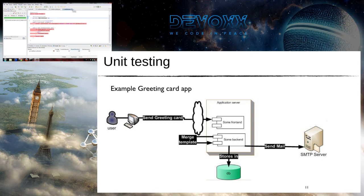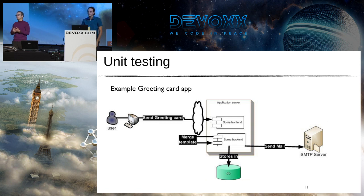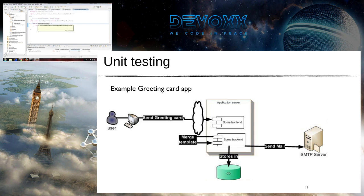A common question is: testing services sounds logical, but what about POJOs, DTOs, or the domain model? Should we write tests for all our getters and setters? The answer is: no, that won't be effective, but yes we should test them. We should look for an intelligent way of testing these objects.